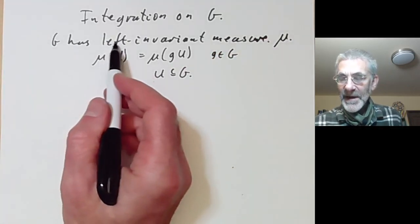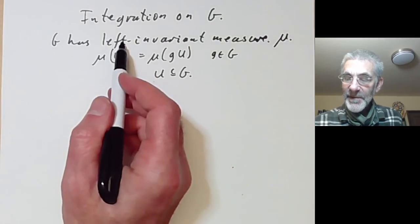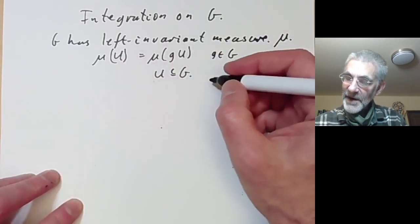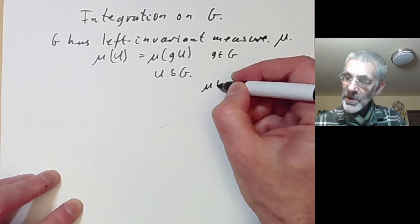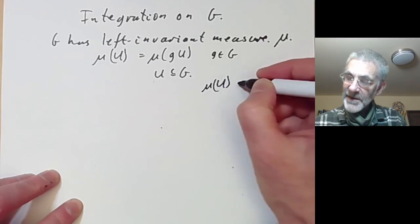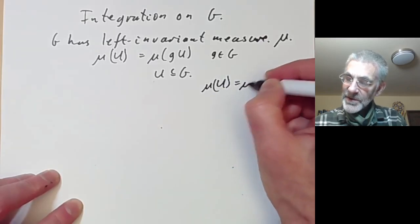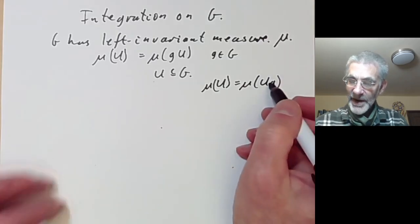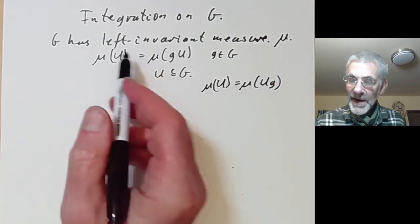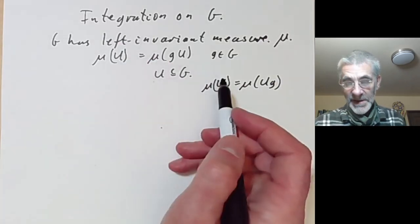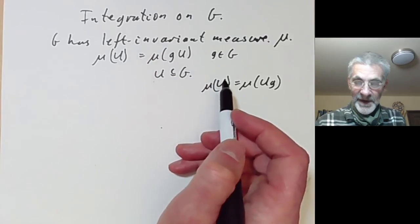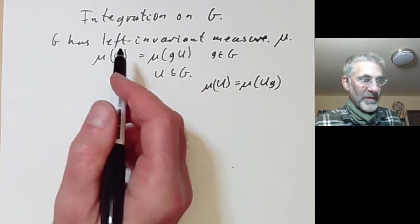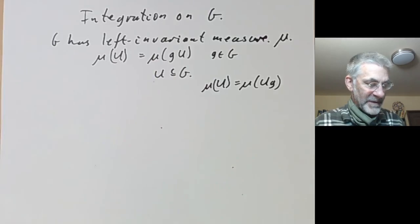It's called left invariant to distinguish it from a right invariant measure, which would say the measure of a set mu of U is equal to mu of U multiplied by g on the right. For many groups the left invariant measure is the same as the right invariant measure, but in a few minutes we'll see an example of a group where these are actually different.